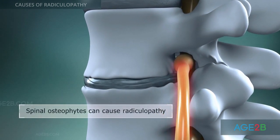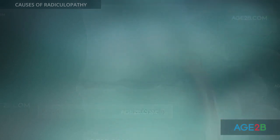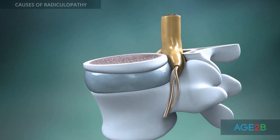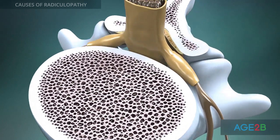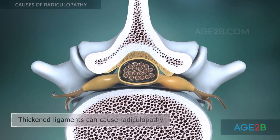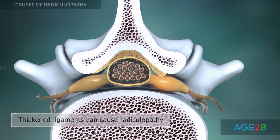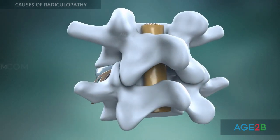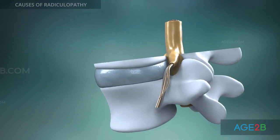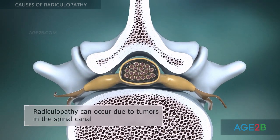In various portions of the spine, with age, ligaments that bind the spine together become thickened and stiff. This condition can cause ligaments to bulge into the spinal canal and compress the intervertebral nerves. Radiculopathy can also develop due to tumors that grow in the spaces between the spinal cord and vertebrae.